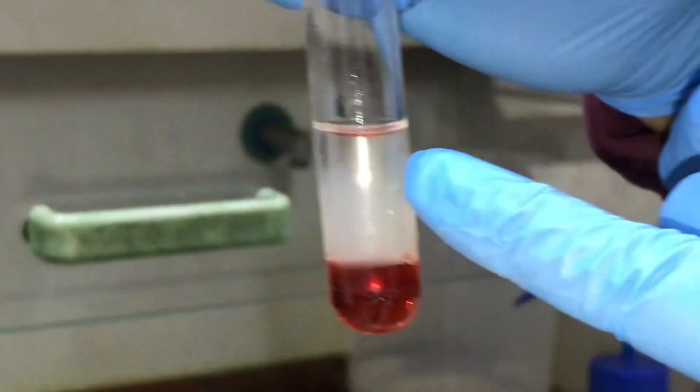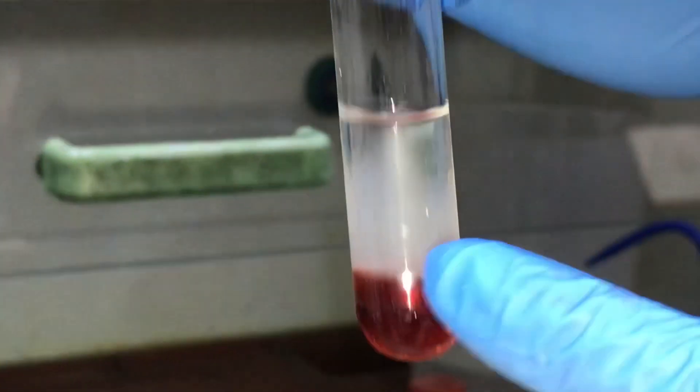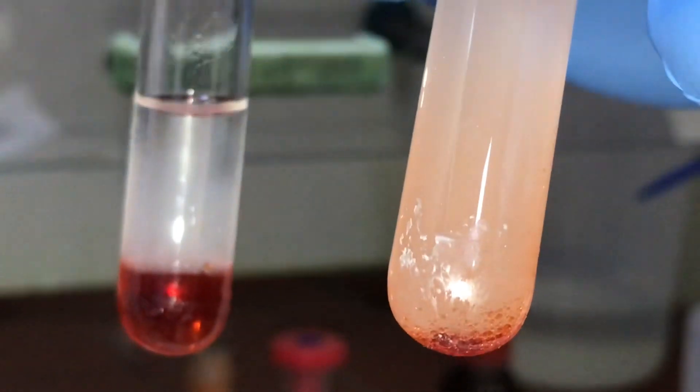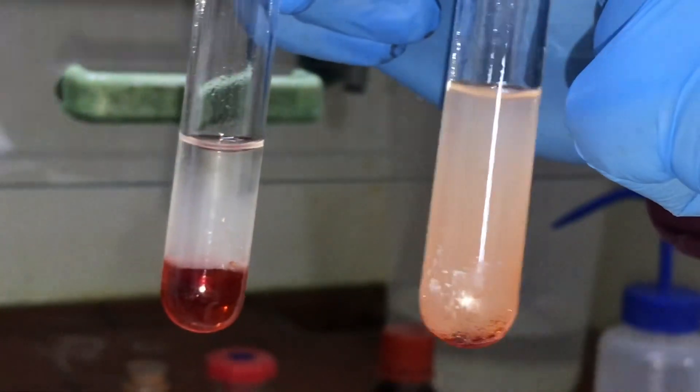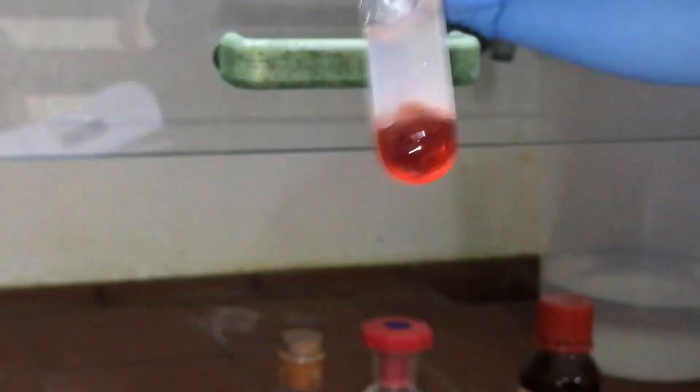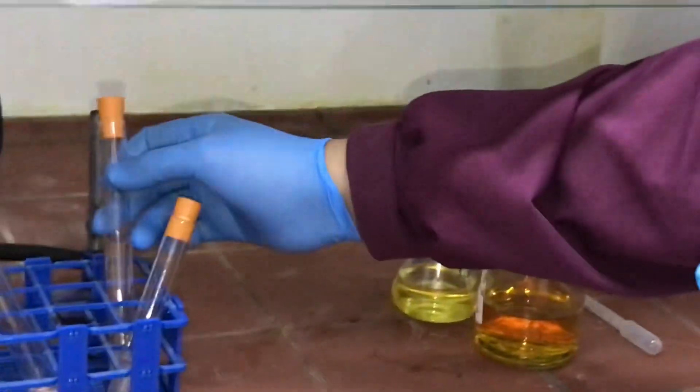You can see this white precipitate just above the bromine water. It's no longer orange. You see this precipitate, and if you leave it a little longer, it will settle even further.